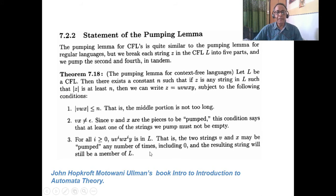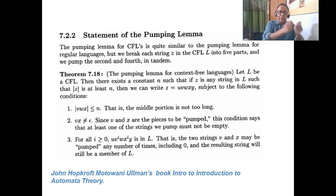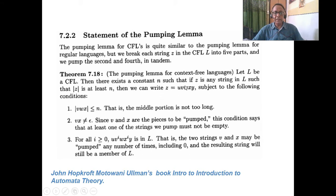Let us go for the theory. Take a string. It will consist of u v w x y. If you divide it, it chops into u v w x y, and the length should be at least N. The mod of the string means you take a sample string with sufficient length — you cannot take a very small one. Sufficient repetition is there. Then v and x is the portion where repetition should occur, and w is the middle portion. W may be null. Also, the condition |vwx| ≤ N ensures the middle portion is not too long, and it ensures that both v and x are not epsilon — they will not vanish.